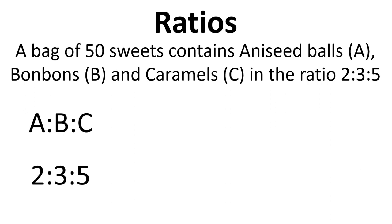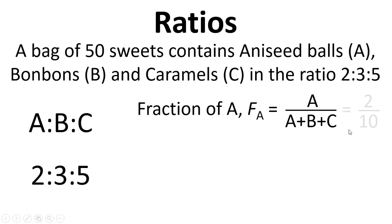A to B to C is two to three to five. And now the fraction of A, to work this out, we have to have the number of A from the ratio and add up all the other numbers. So that is two over ten. The two comes from the fact that two is the ratio of A in relation to the others and the ten comes from adding up two plus three plus five.